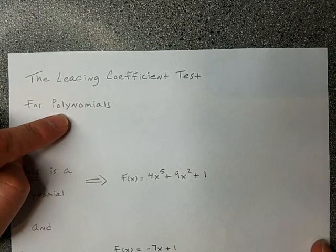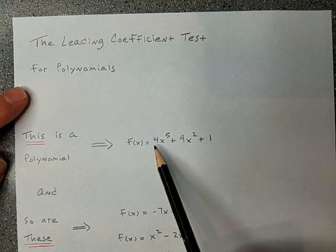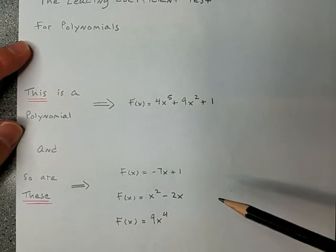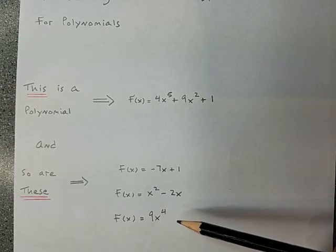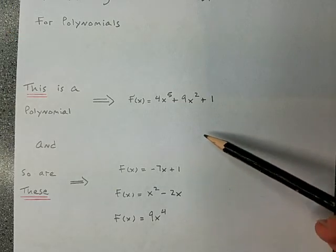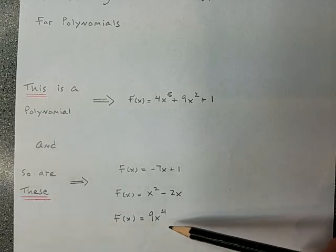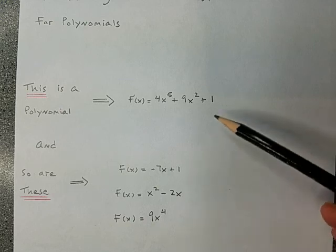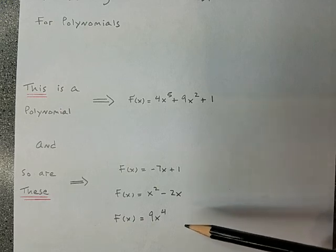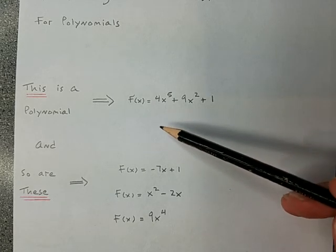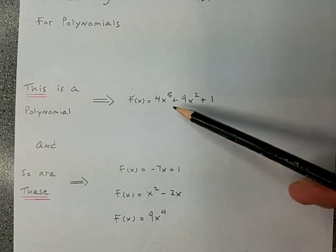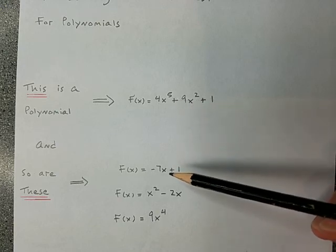Let's first talk about what a polynomial is. This is a polynomial, and these are also polynomials. Notice I didn't give a formal definition right away — I just gave some examples. What do these examples have in common? A polynomial is an algebraic expression that has whole number powers on the variable.